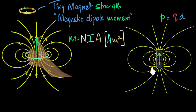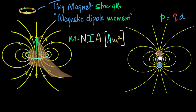The major conceptual difference: for electric dipoles, they are formed by putting one positive charge and one negative charge together — we can call them monopoles. Two monopoles together give us an electric dipole. But for magnetism, we don't have monopoles. In magnetic fields, we only have dipoles — that's a big difference.